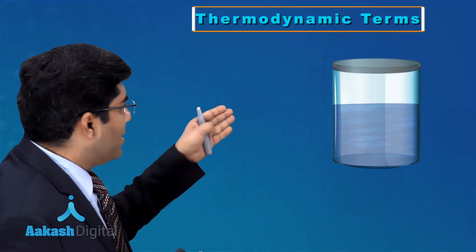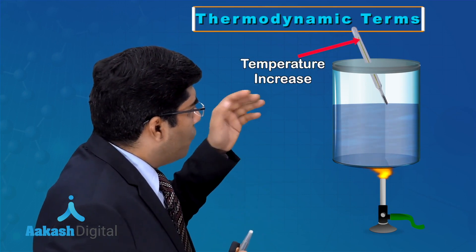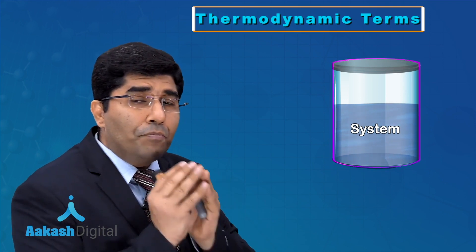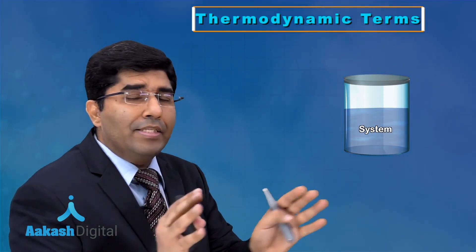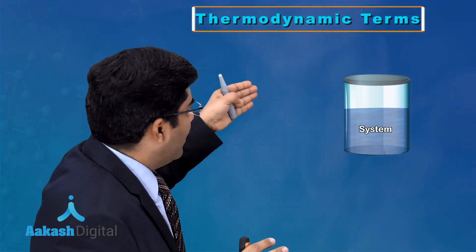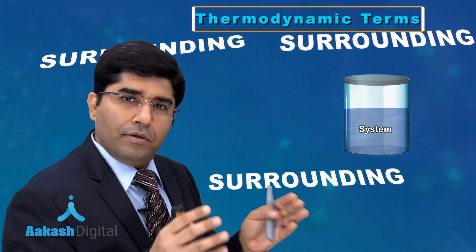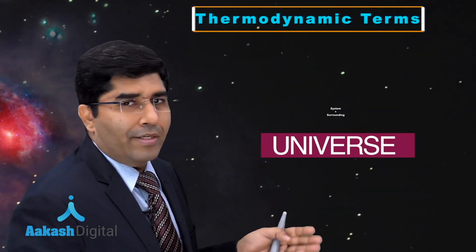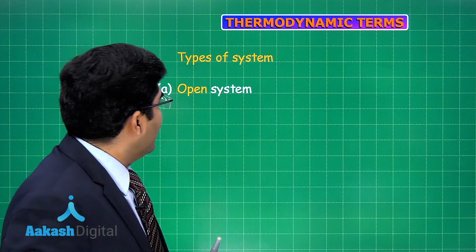For example, this container with water is our system — if we heat it, the temperature of the water will increase. The container and water together have a boundary within which the system is confined. Everything outside that boundary — the air, all particles in the air, everything including us — is the surroundings. That is why system plus surroundings equals the universe.